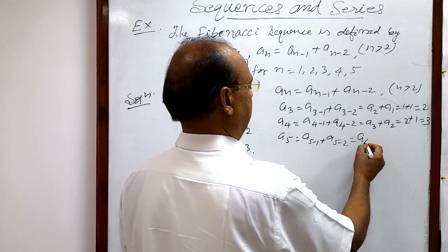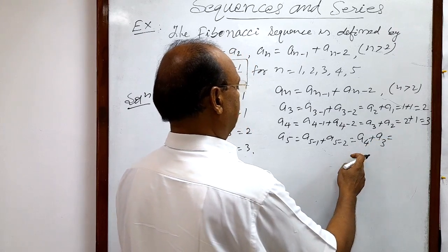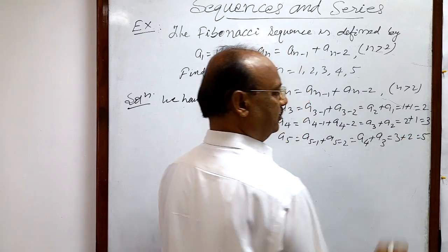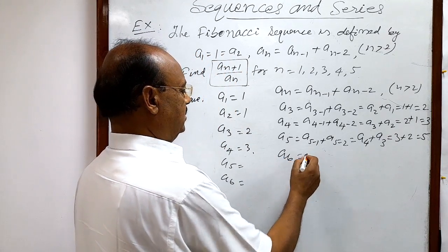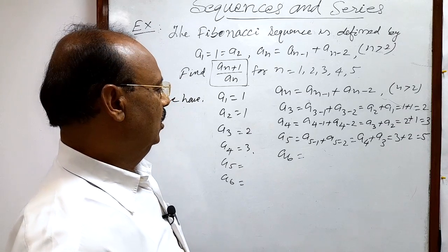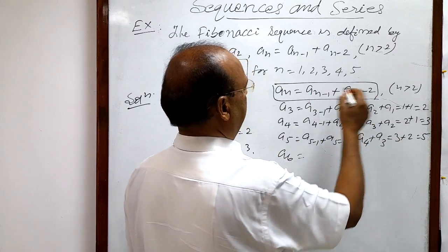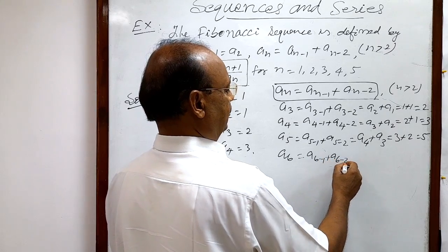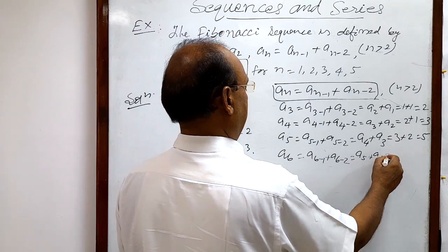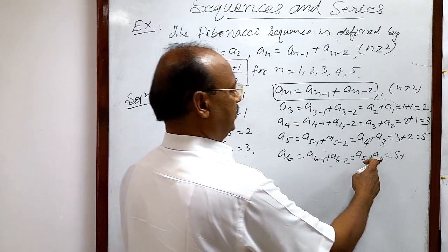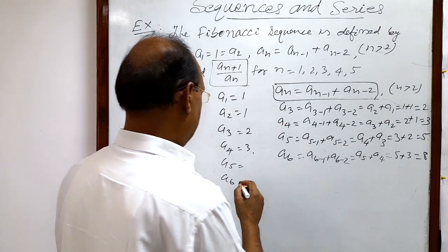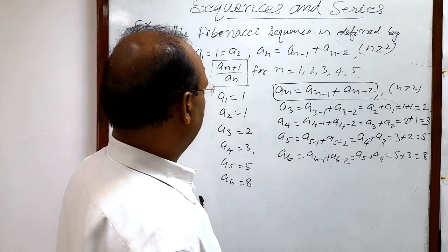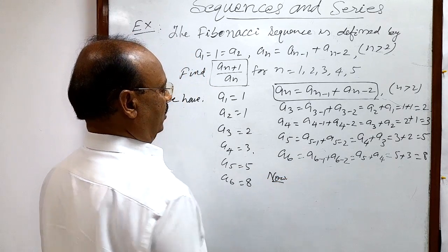Similarly, a5 = a(5-1) + a(5-2) = a4 + a3. a4 is 3 and a3 is 2, so a5 = 5. And a6 = a(6-1) + a(6-2) = a5 + a4. a5 is 5 and a4 is 3, so 5 + 3 = 8. Therefore a5 = 5 and a6 = 8.